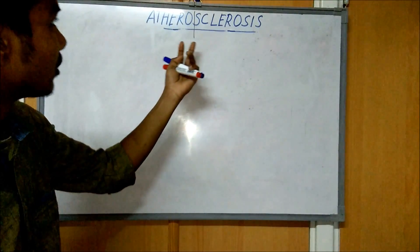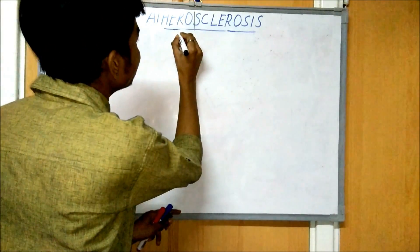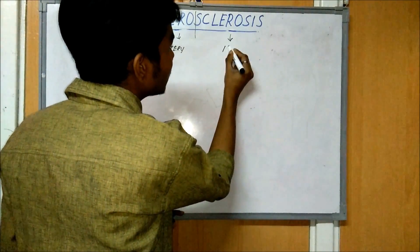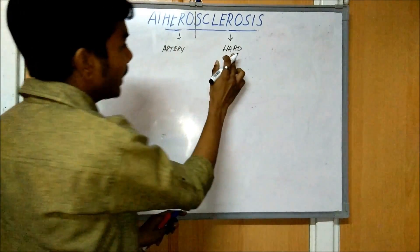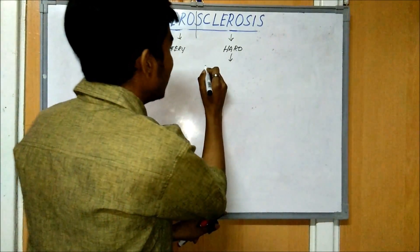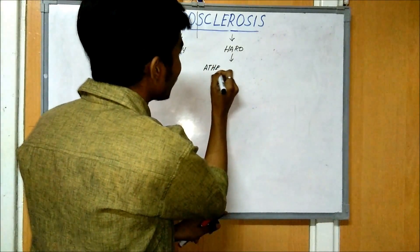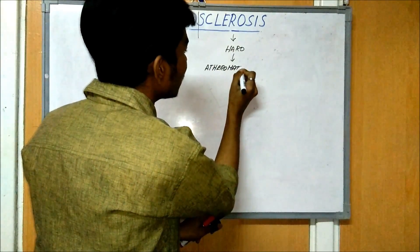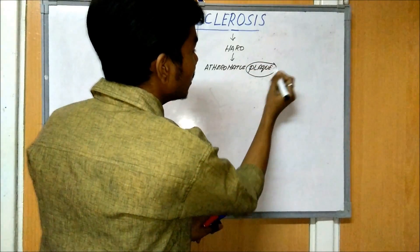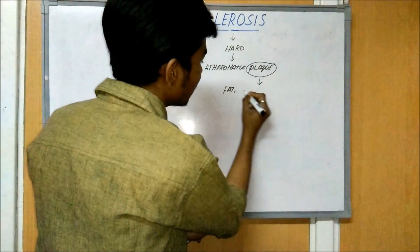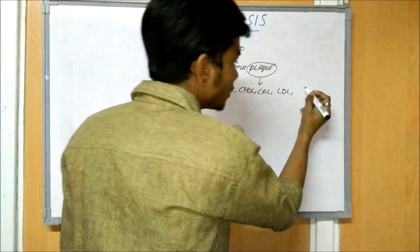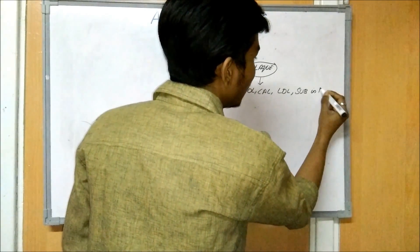From the name itself we can define what is Arteriosclerosis. 'Artero' refers to artery, and 'sclerosis' means hardening of the arteries. The hardening is caused by a plaque which is called Atheromatous plaque. The plaque is made up of fat, cholesterol, calcium, low density lipoproteins, or any other substances in the blood.